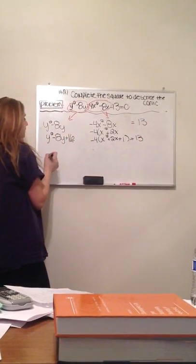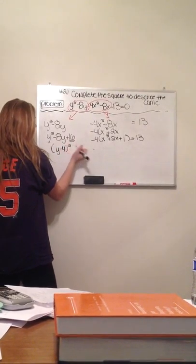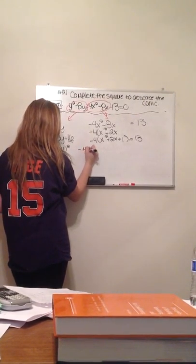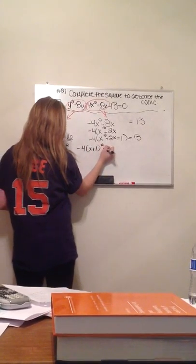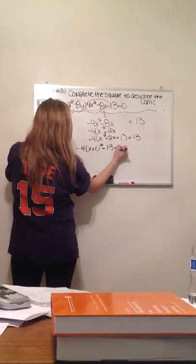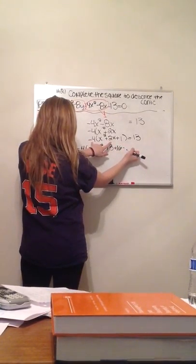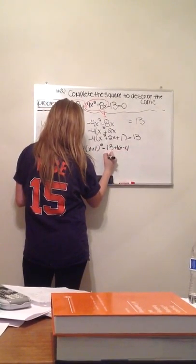Now we're going to factor it. So it would be y minus 4 squared minus 4 times x plus 1 squared equals 13 plus the 16 from here, minus the negative 4 times 1, which would be negative 4, which ends up equaling 25.